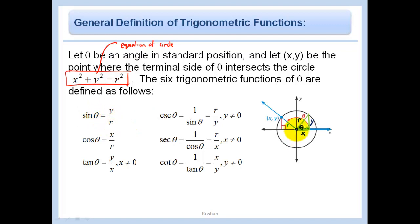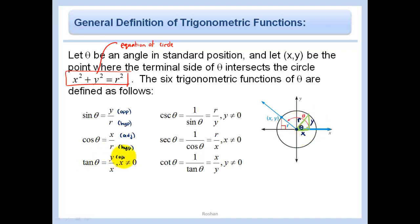The sine of theta is just going to be y over r — opposite over hypotenuse. Our cosine is just going to be adjacent, which is x, over the hypotenuse. And our tangent is just going to be opposite over adjacent. Make sure x is not equal to 0 so we don't divide by 0. The cosecant we just flip: r over y. The secant: r over x. And the cotangent: x over y.